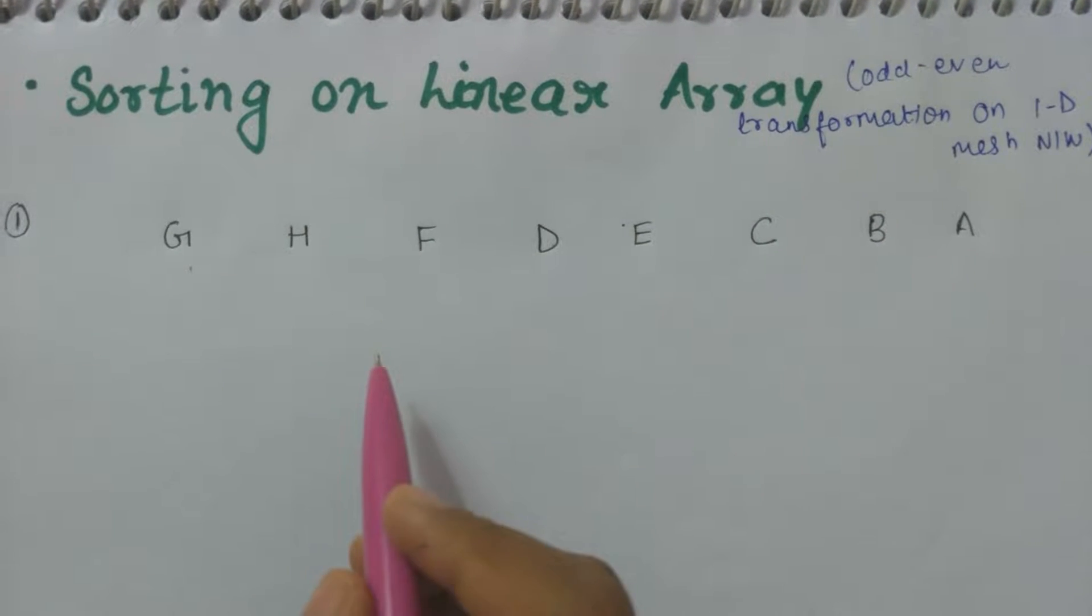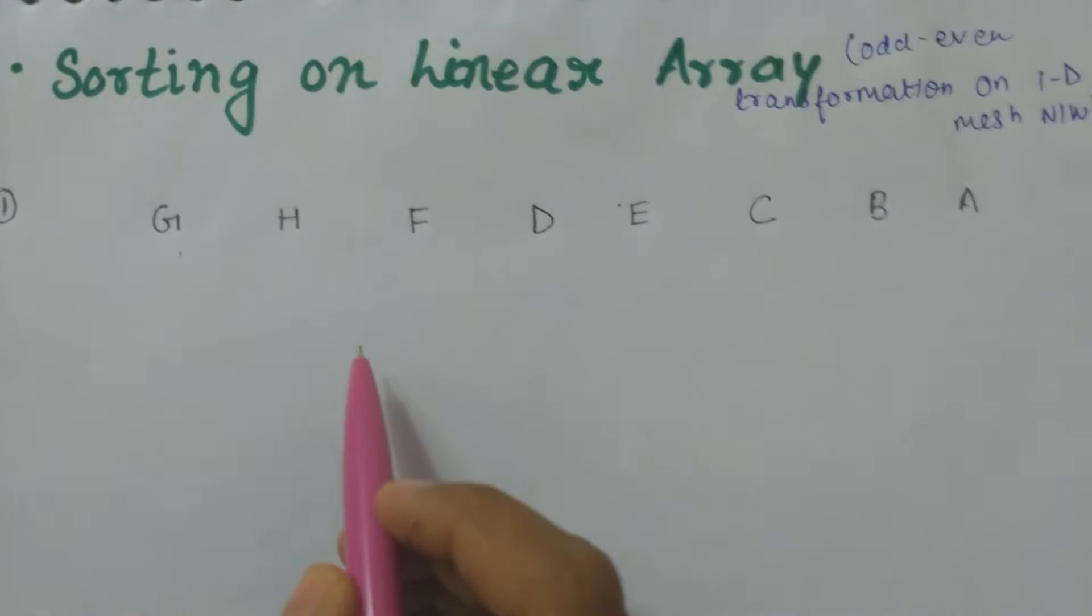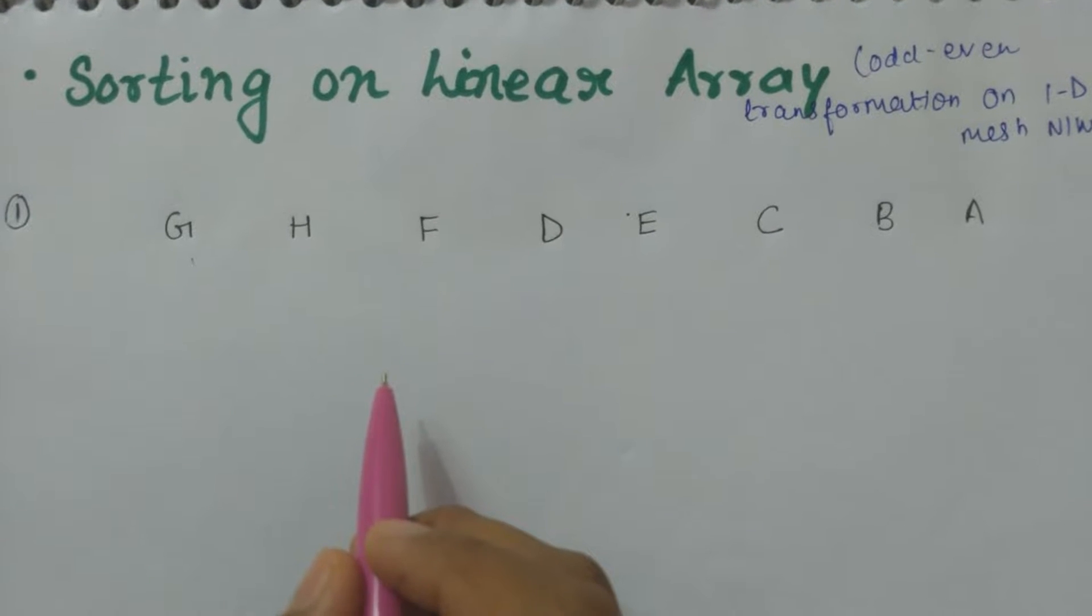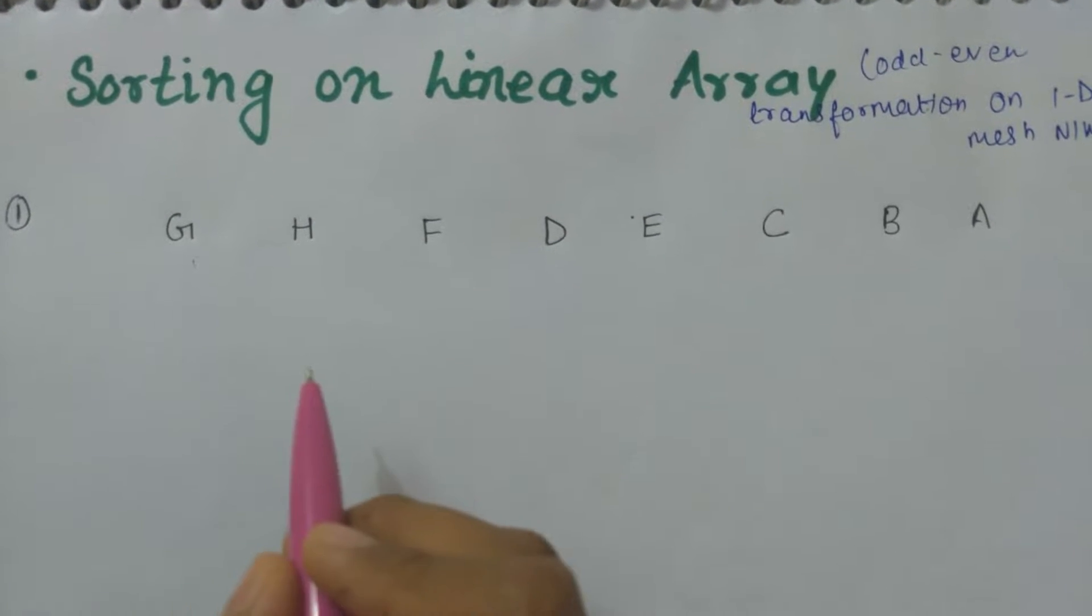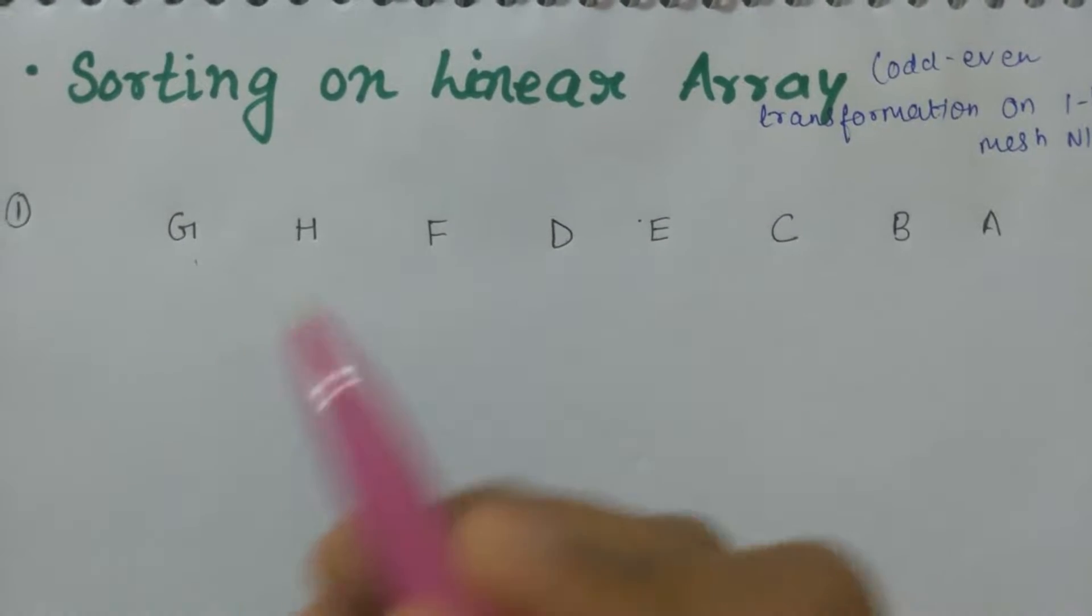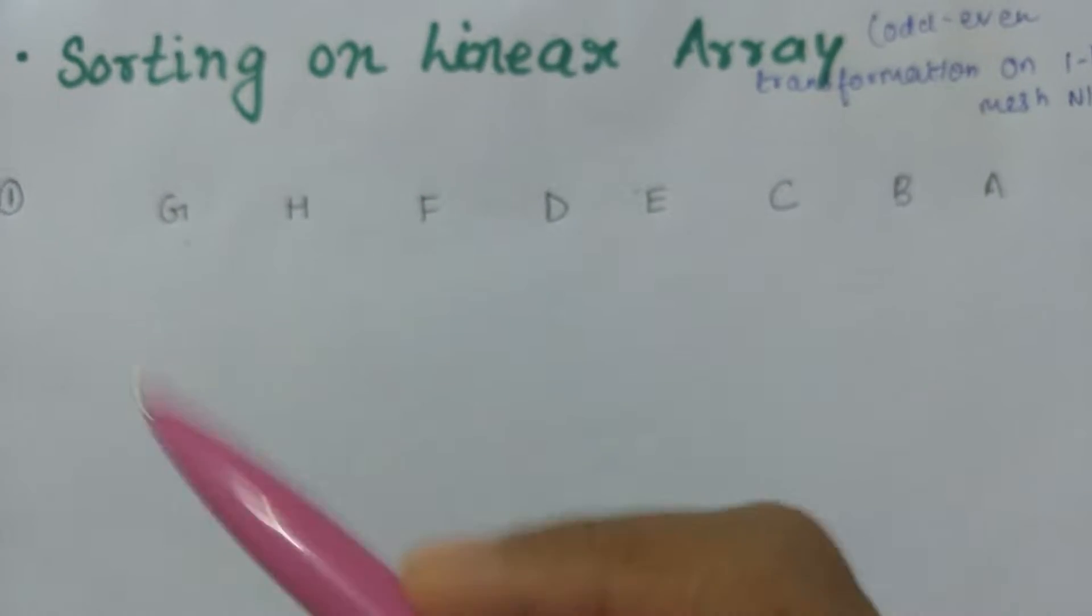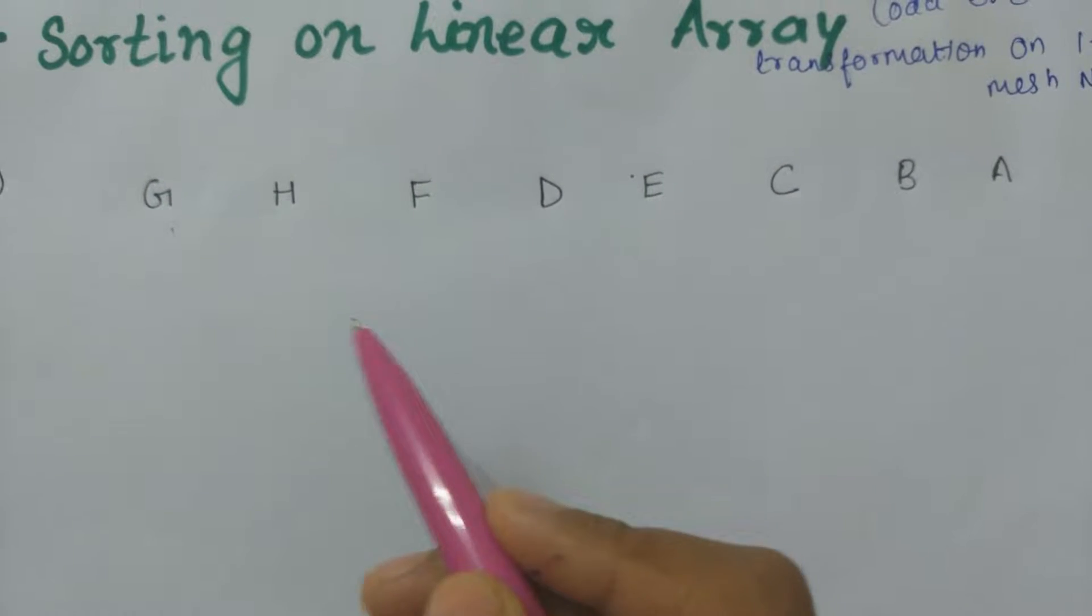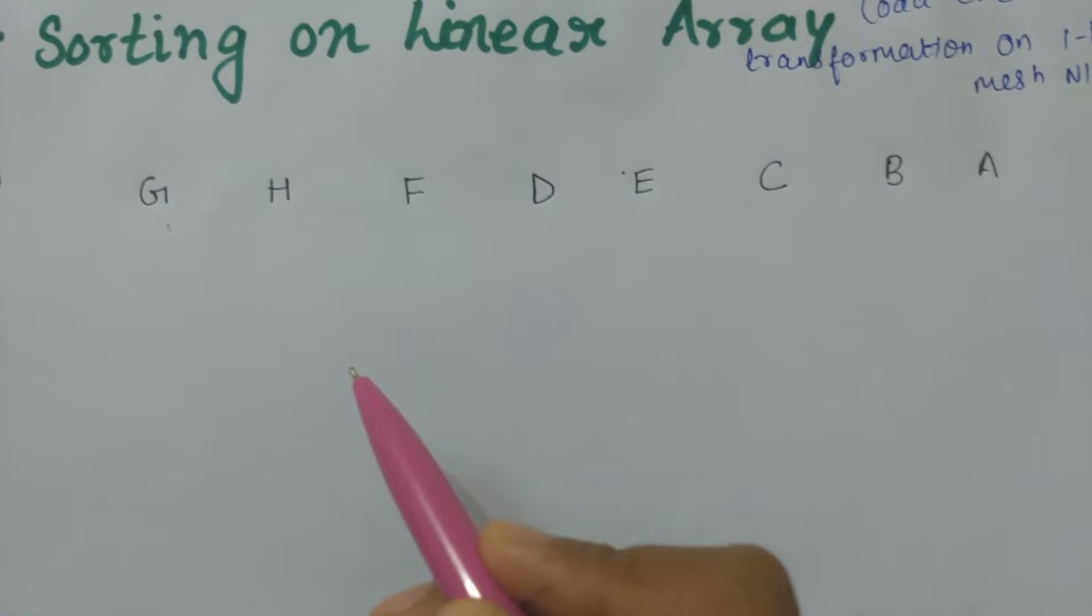This is the question and we have to perform odd-even transformation in it. The rules are simple: we will make simple pairs in order, and if the pair is not in proper order, we will swap the alphabets. We will repeat this process till we obtain the series in proper order.